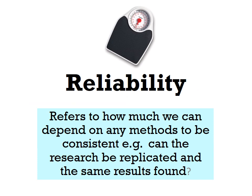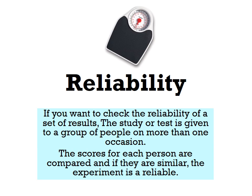Reliability refers to how much we can depend on any method to be consistent — it's about the consistency of a method used to measure something. Can the research be replicated and yield the same results? To check reliability, a study or test is usually given to a group of people on more than one occasion. If you get the same or similar results each time, the experiment can be deemed reliable.